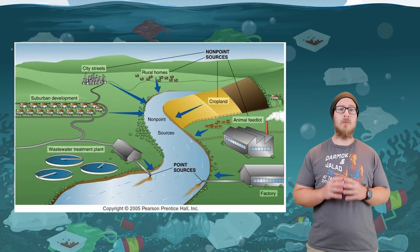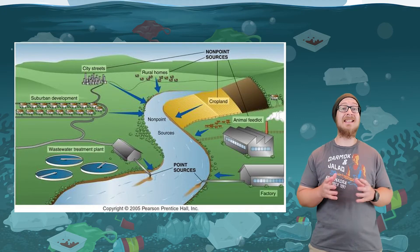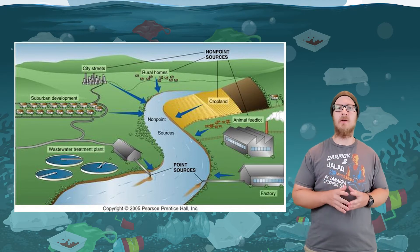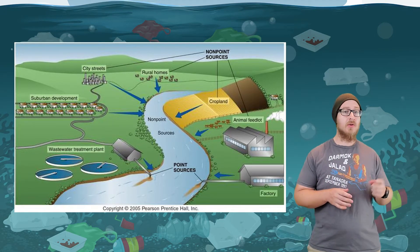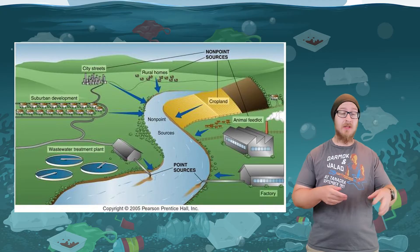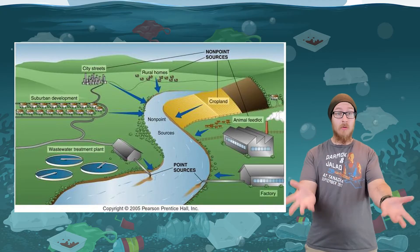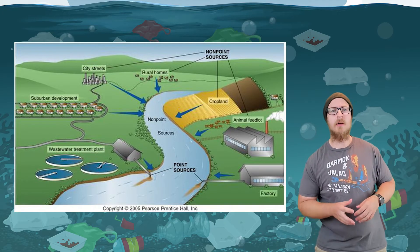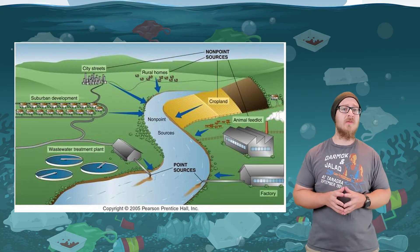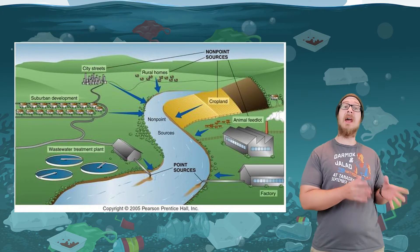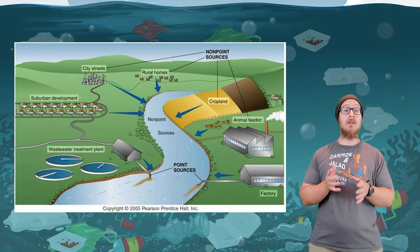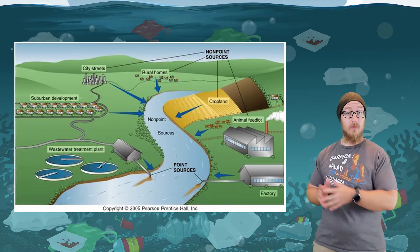Water pollution occurs when pollutants contaminate a body of water — streams, rivers, lakes, oceans, or groundwater. Sources of pollutants can be agricultural, industrial, or municipal.